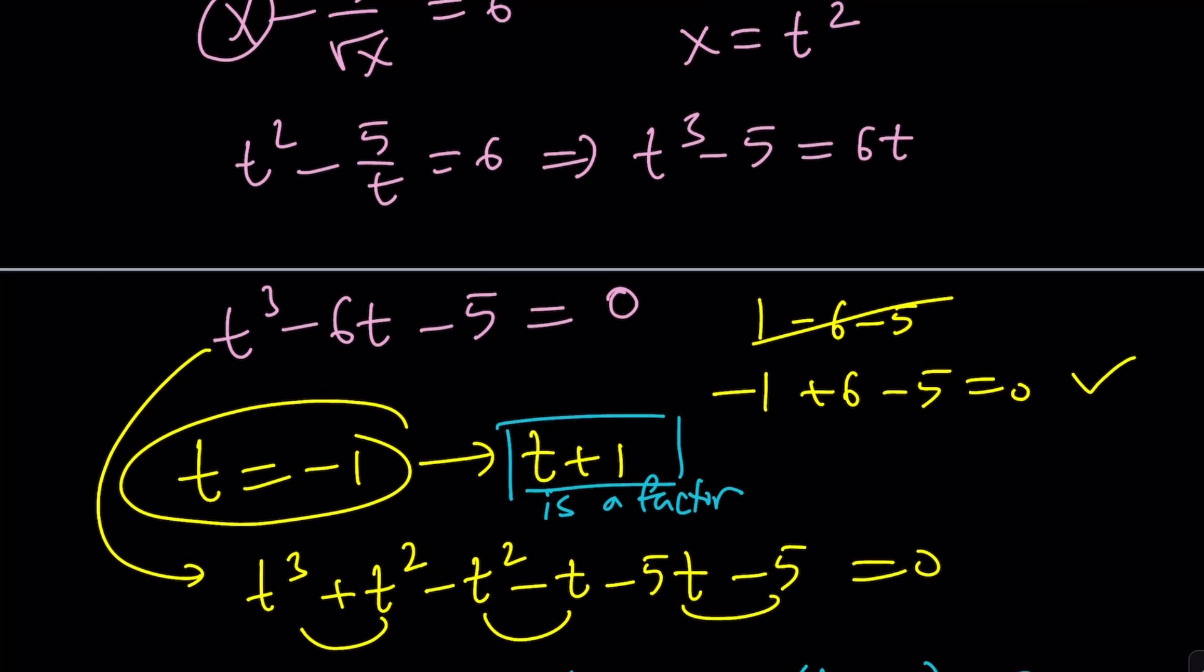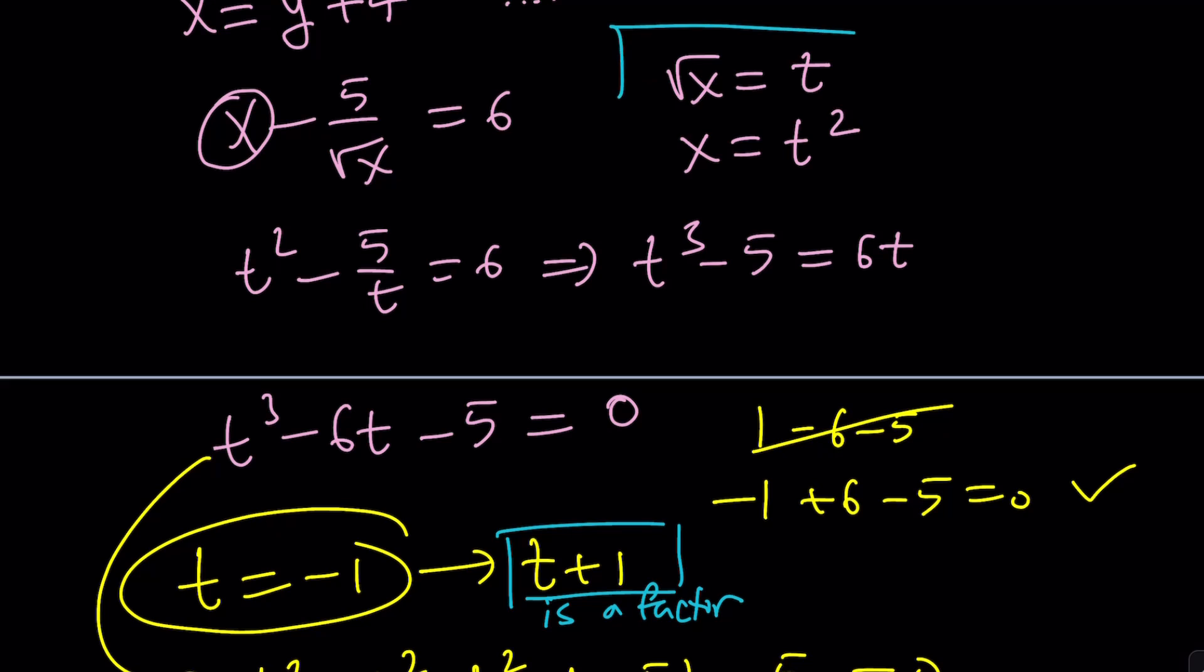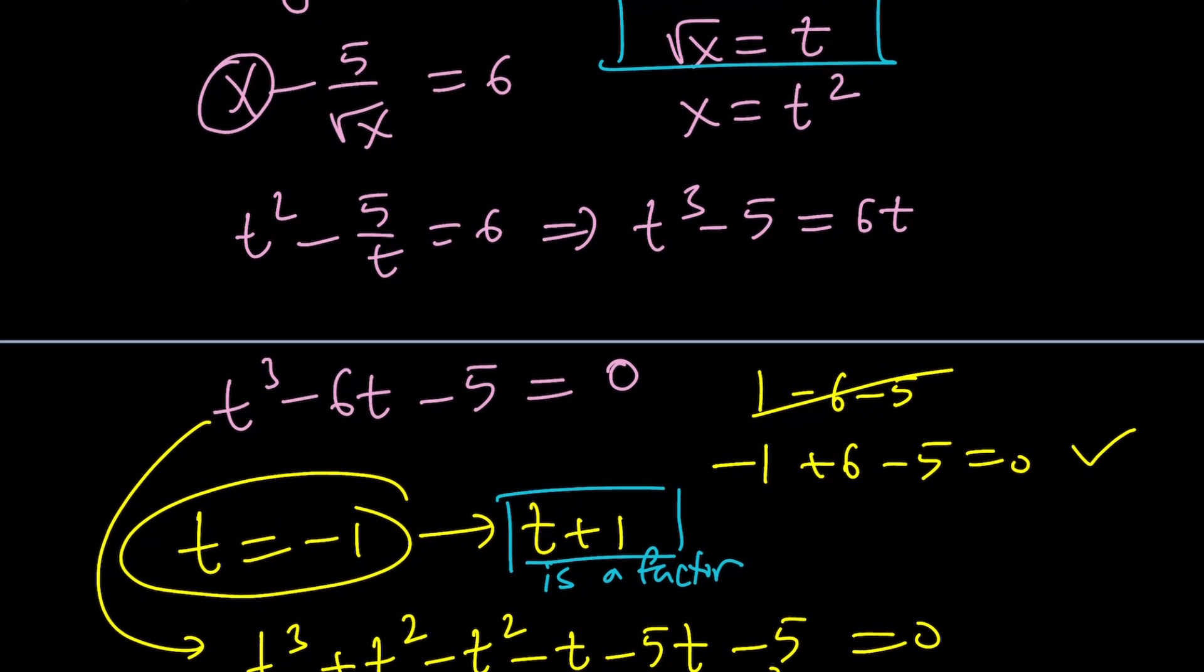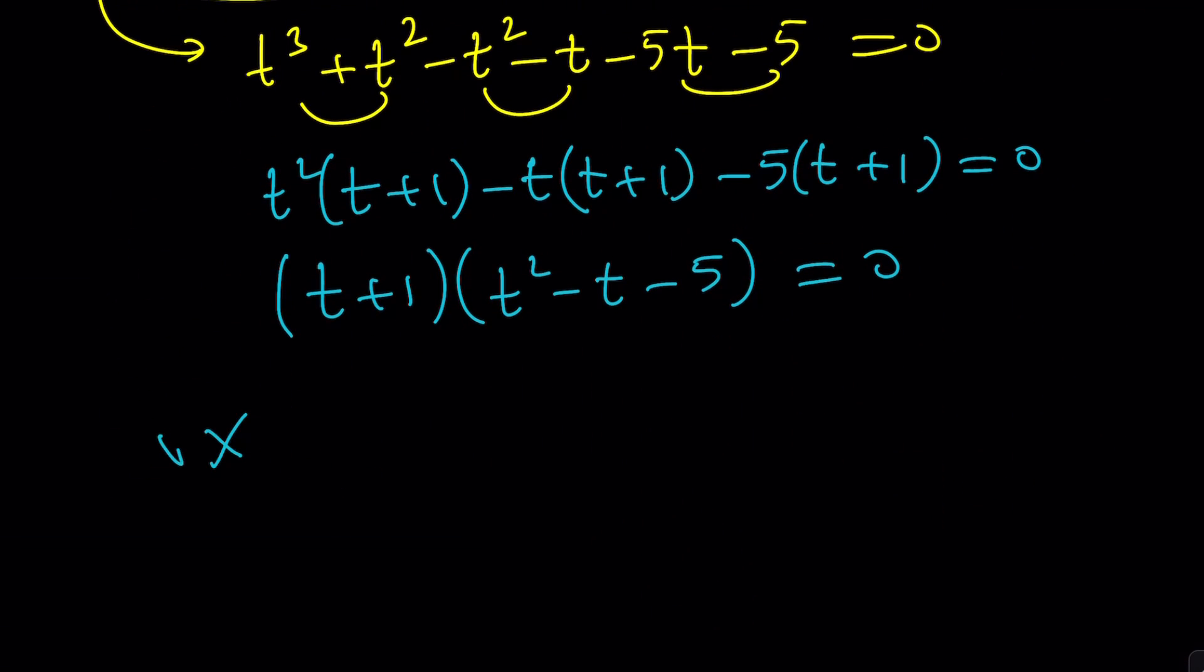Now from here, we get t equals negative 1. We already knew that. But we kind of need to back substitute. Now remember, we're looking for real solutions. x is real. So square root of x equals t. And that equals negative 1 is not going to give us any real solution. So we have to reject that. Let's take a look at this one.